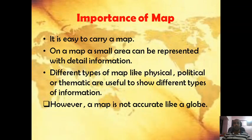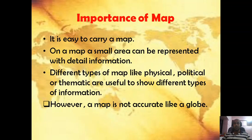What are the advantages of a map? First, it is easy to carry. Second, a small area can be represented with detailed information. Third, different types of maps — like physical, political, or thematic — are useful to show different types of information. However, a map is not as accurate as a globe, because whenever we represent a three-dimensional object on a two-dimensional surface there will be some distortion.